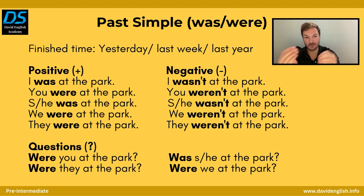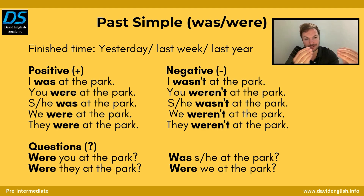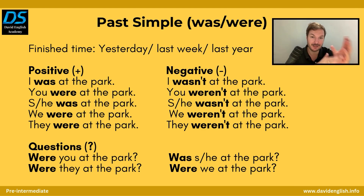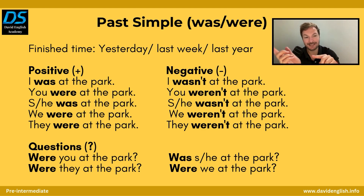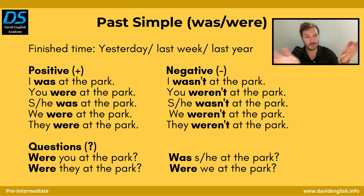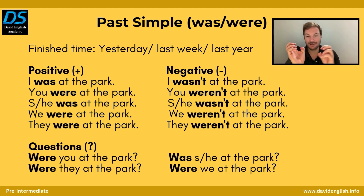Those are the forms for was and were — positive and negative. And then for questions, remember we're going to be putting the verb in front of the subject. Were you at the park yesterday? Were they at the park last night? Was he or she at the park yesterday? Or were we at the park? Remember those are the forms.